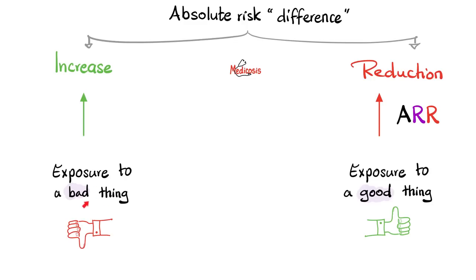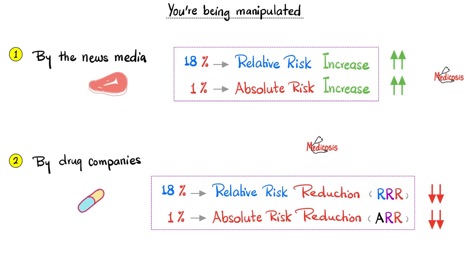When the news media wants to scare you, they report the bigger number because it looks scarier and ignore the smaller one. When pharmaceutical companies want to prove their drugs work, they report the bigger number because it shows greater improvement — e.g., 'our medication reduced the risk of clots by 18%' — but this is in relative terms, not absolute terms. Conversely, if a company is arguing in court that their compound did not cause a certain injury, they report the smaller number and label the bigger number as misinformation.